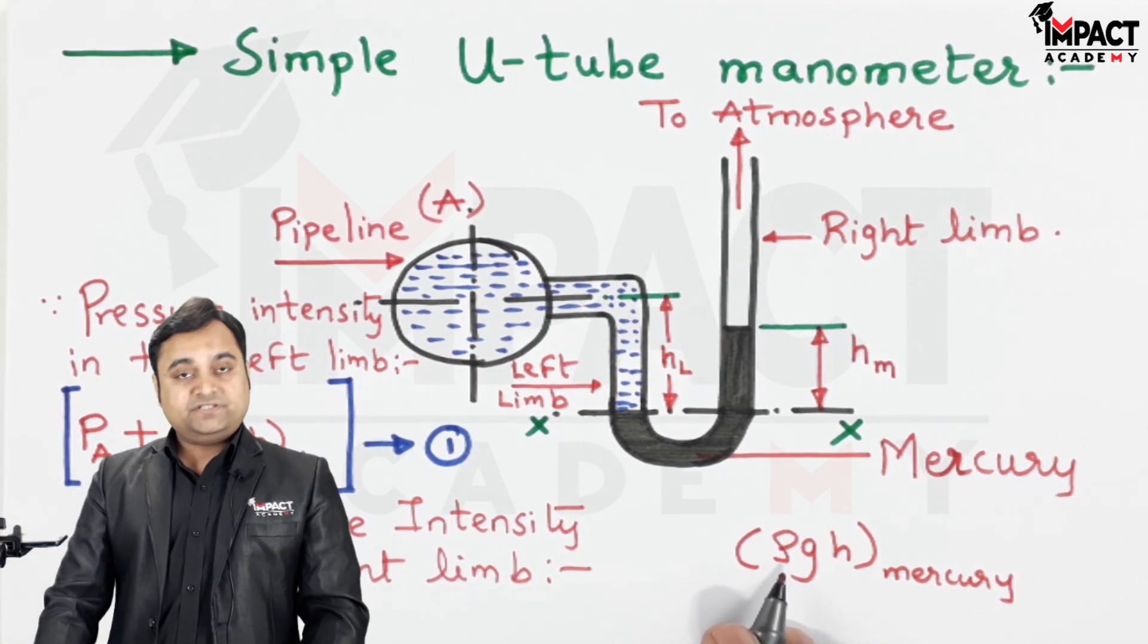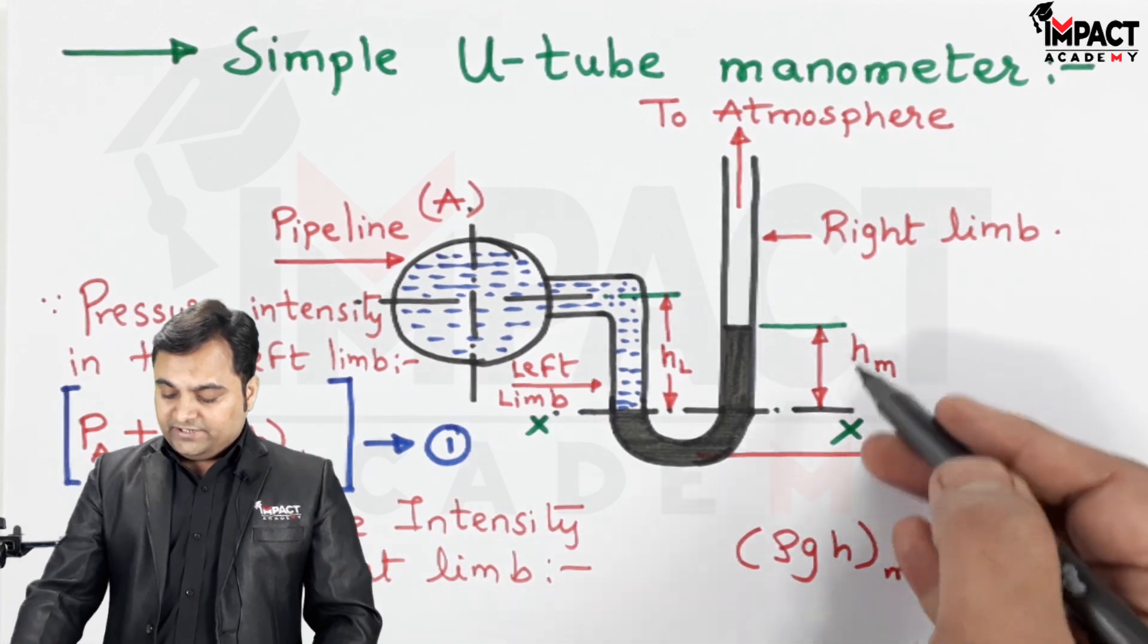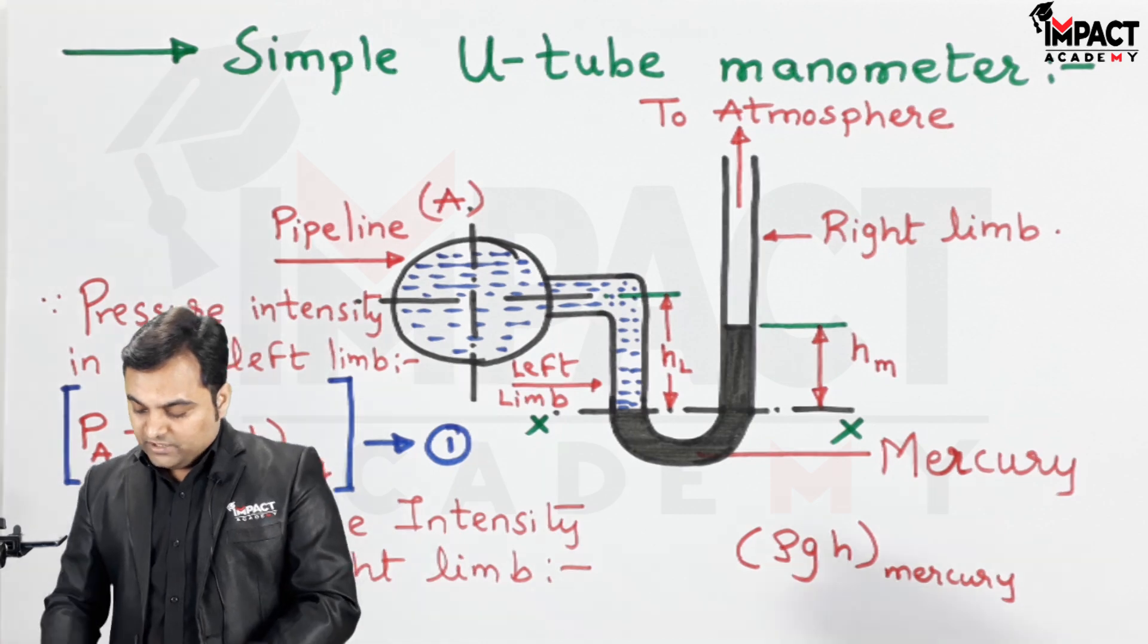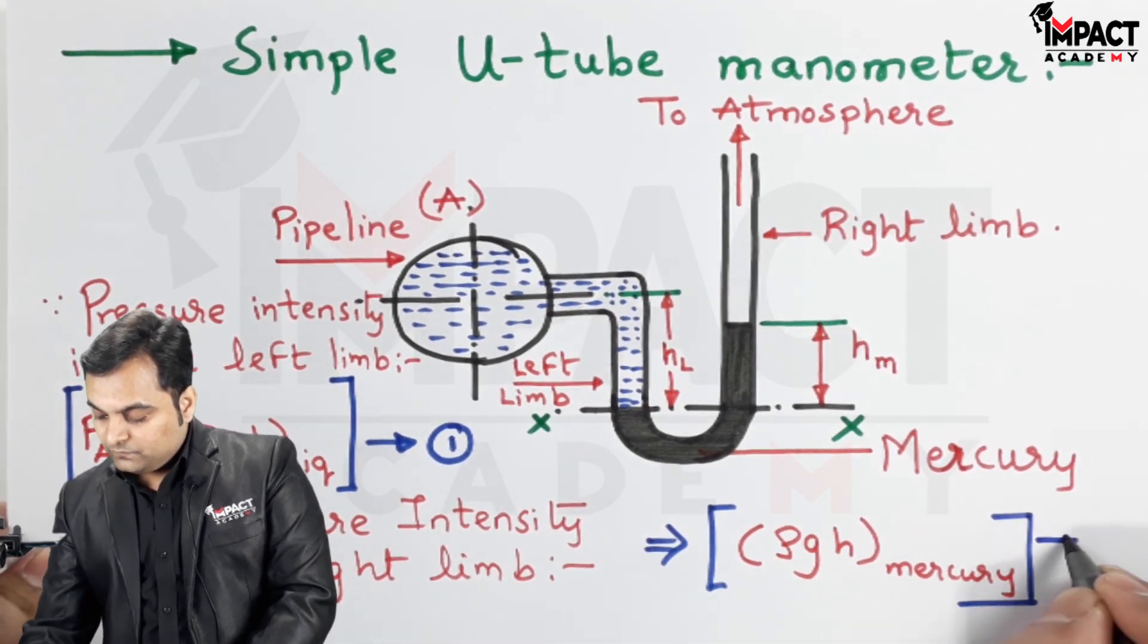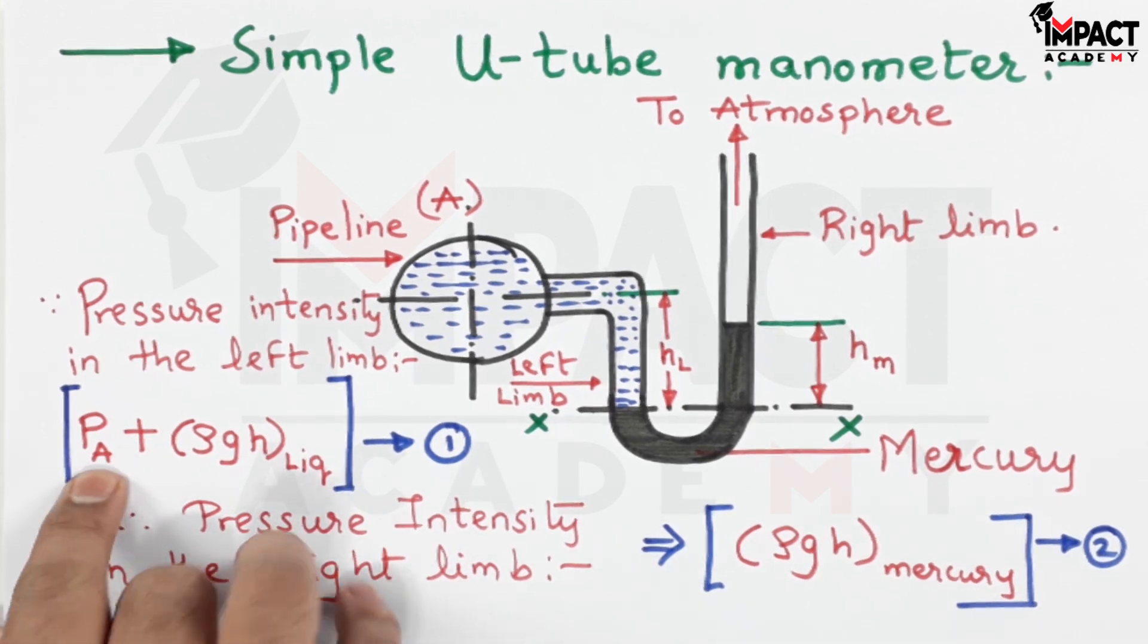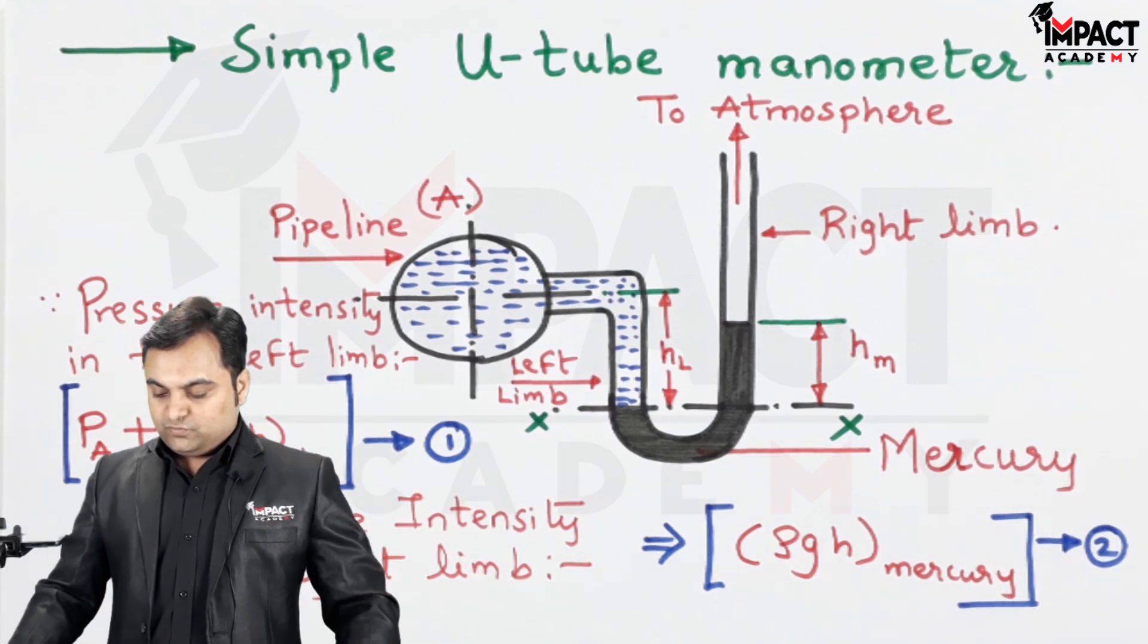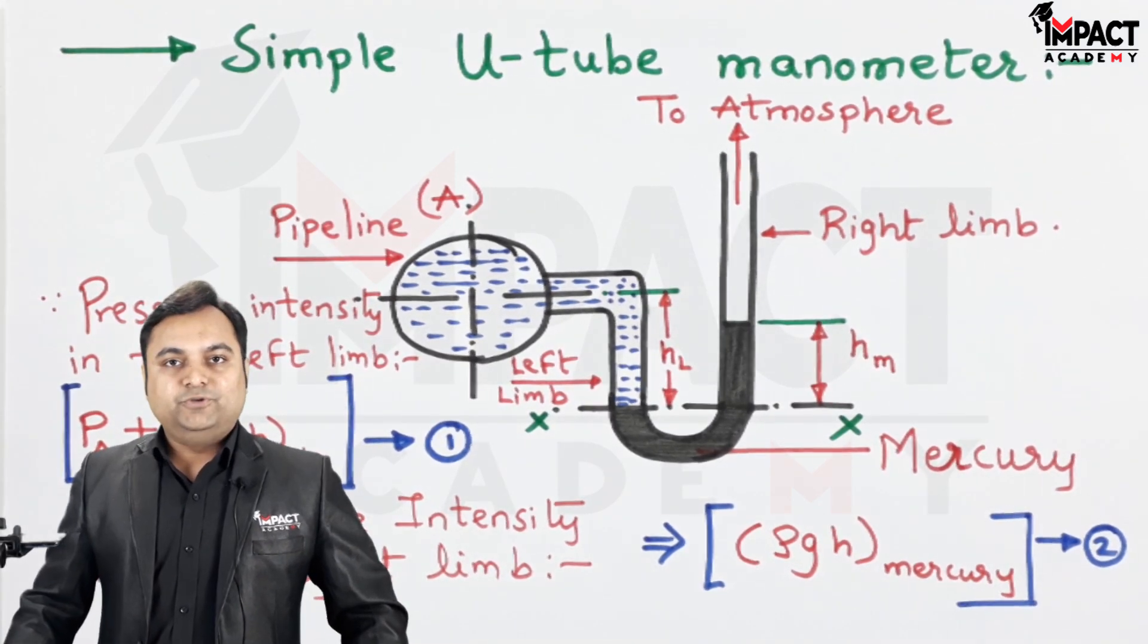which is 13,600, G is 9.81, and H we can get different values for different liquids. That would become equation 2. After that, we have to just equate equations 1 and 2, and we can easily find how much is the pressure inside this pipe A. This was a simple video on what is meant by a simple U-tube manometer.